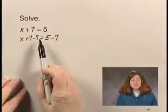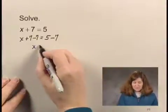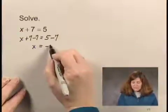Since 7 minus 7 is 0, we have x equals, and 5 minus 7 is negative 2.